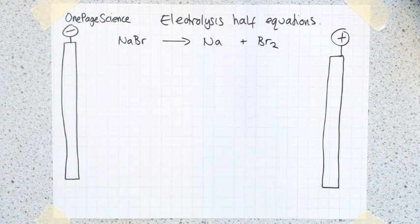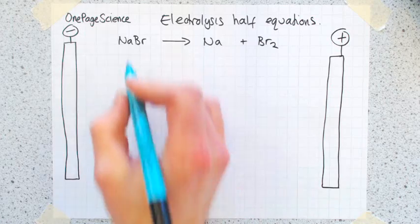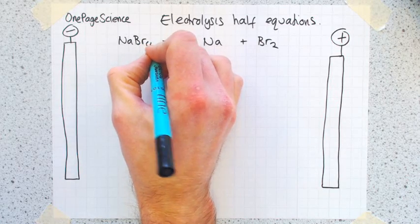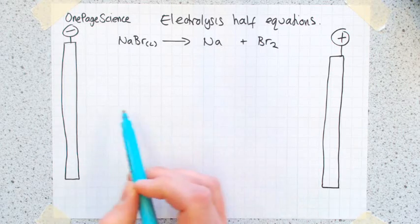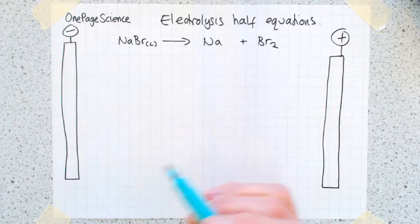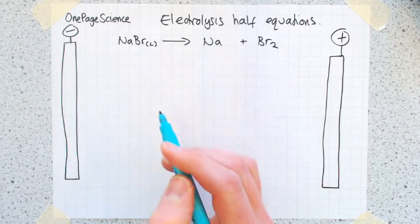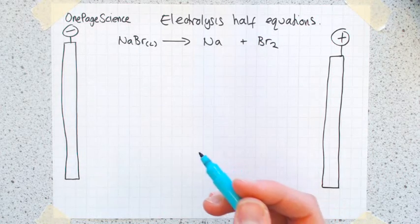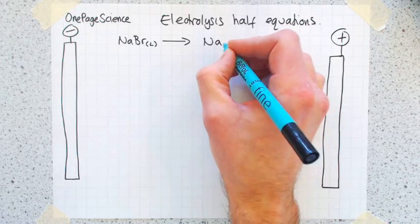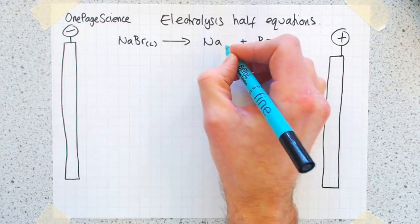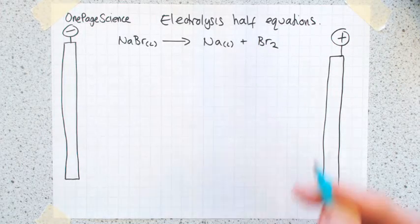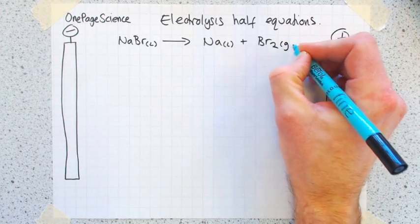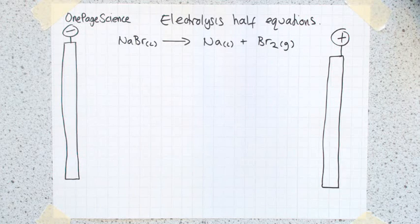Now it's important that we have state symbols because it helps you understand what's going on in electrolysis. For this to work, it has to be a liquid. Remember that's because for electrolysis to work, ions have to be able to move from one side to the other. If it's a solid, it won't work. You have to heat this up above the melting point of sodium, so the sodium also ends up being a liquid, and bromine at room temperature or above is a gas.